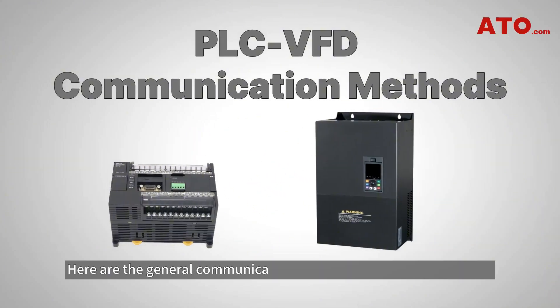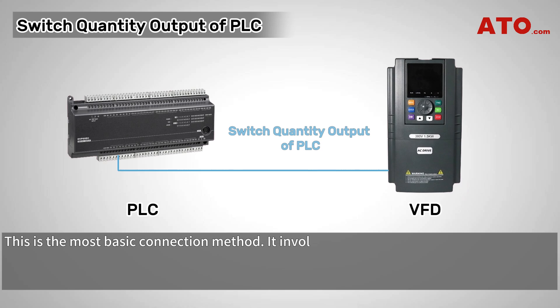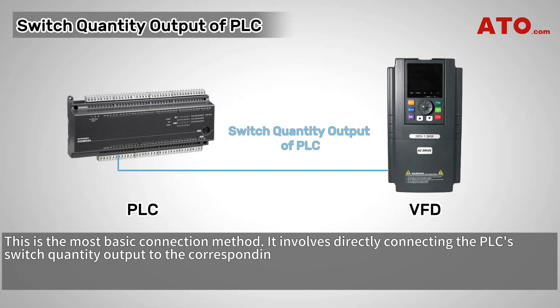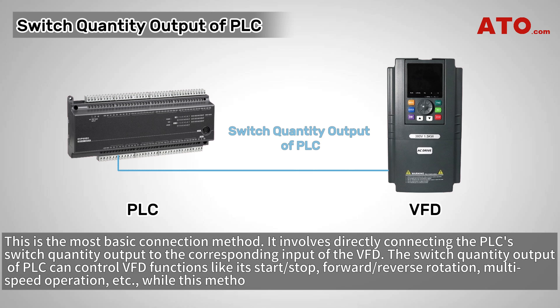Here are the general communication types between a PLC and a VFD. The first is Switch Quantity Output of PLC — this is the most basic connection method. It involves directly connecting the PLC's switch quantity output to the corresponding input of the VFD to control functions like start-stop, forward-reverse rotation, and multi-speed operation. While this method is not suitable for precise speed control.